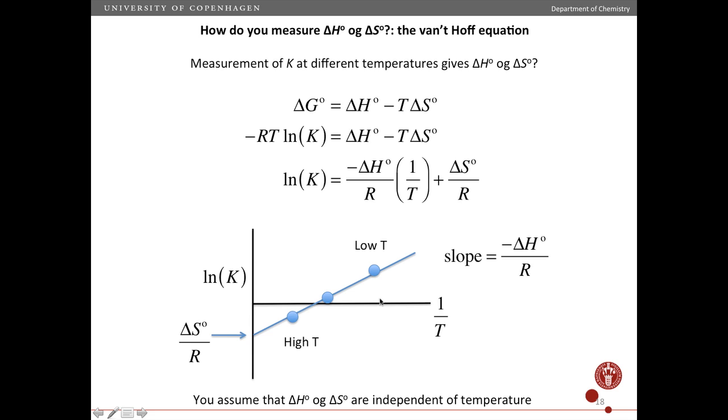I have to remember when I do this that because I'm plotting 1 over T, this region corresponds to a high temperature and this region out here corresponds to a low temperature.